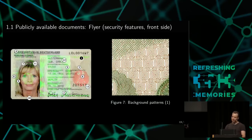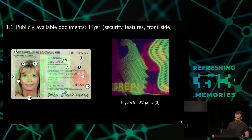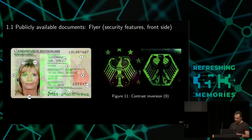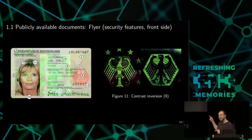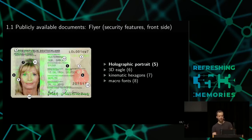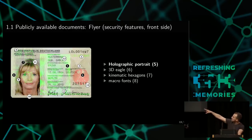We'll do a quick recap of the watermarks, especially those with images on the Bundesdruckerei flyer. We have repeatable background patterns, microscopic prints which you don't see on the webcam, a UV print which you'll never see on the webcam, a variable color print which you may see but won't clearly see on the webcam, and a contrast inversion hologram. Notice that this flyer is pretty high resolution, so we can just redraw it in GIMP or Photoshop and have our own sample watermark to work with. Next we have a holographic portrait — I'll show you later how to fake that — and then the eagle as hexagons above the photograph.